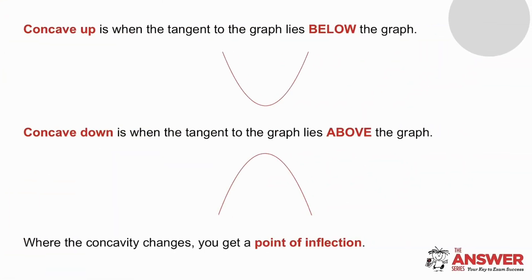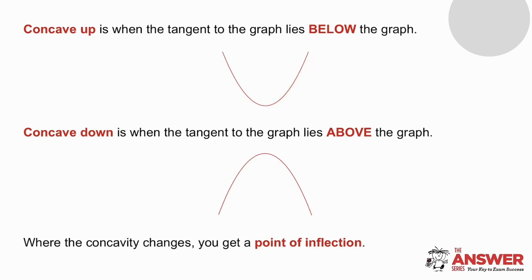When we ask where a graph is concave up, it means where on the graph does the tangent lie below the graph. So if you look at what I've got drawn here, wherever I draw the tangent, it is always below the graph. And if that is the case, we say that that part of the graph is concave up.